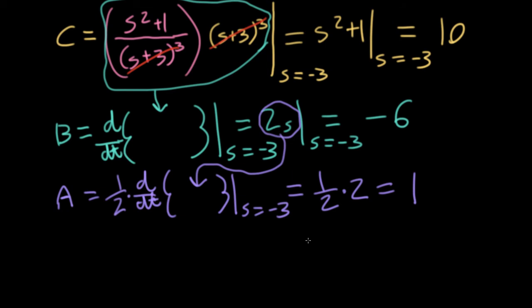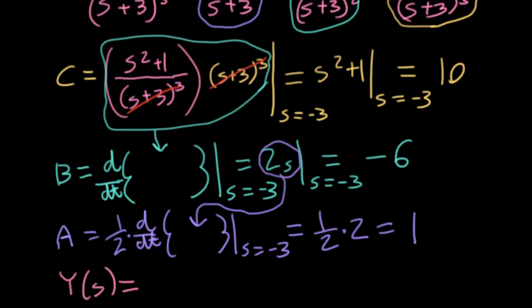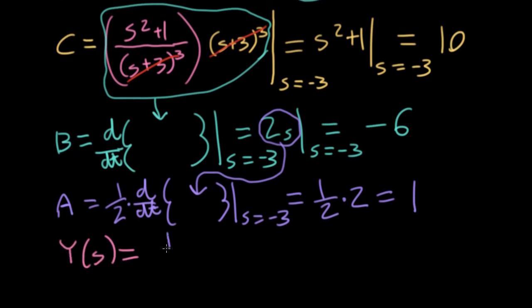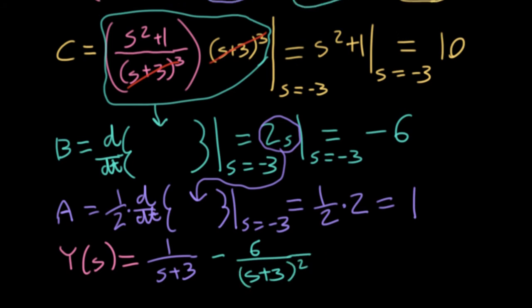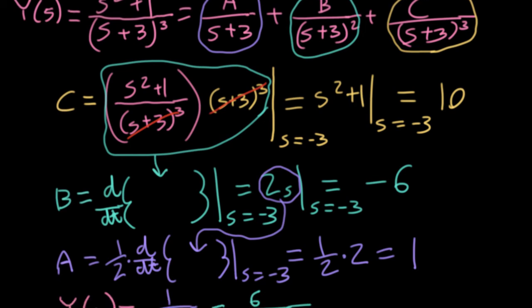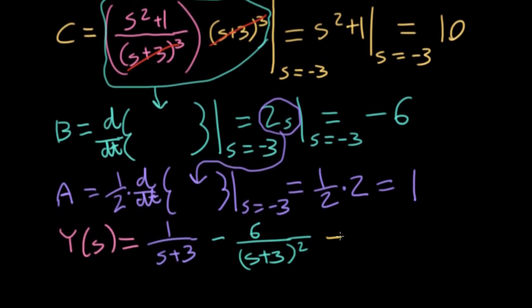Okay, so let's take these values and plug them back into our original expression. We wind up with y of s equal. So the first term here is the s plus three term. A here is one. So I'll write one over s plus three. The next term b, I'll write minus six over s plus three squared. And then the last term that has c, that's that cubed term here. So I'll plug in 10 for that. And I'll have plus 10 over s plus three cubed.